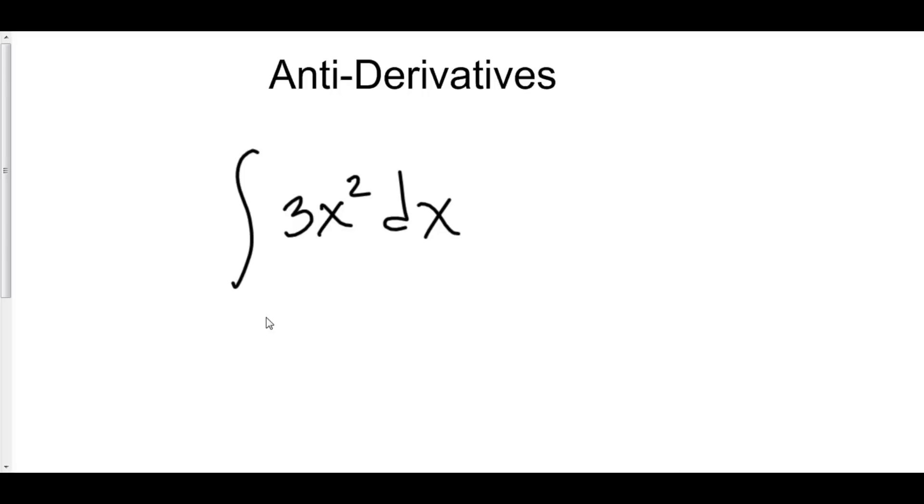So, for example, if we said, what's the derivative of 3x squared? Well, the answer would be 6x. But that's not what this is asking. It's asking us for the antiderivative.